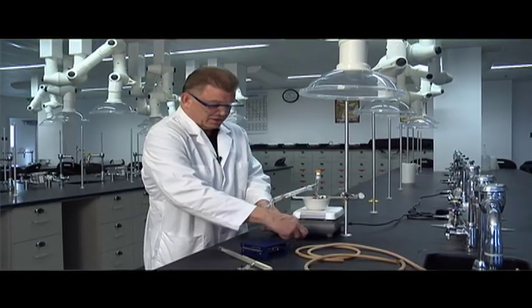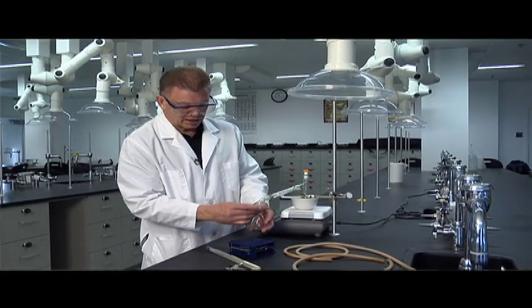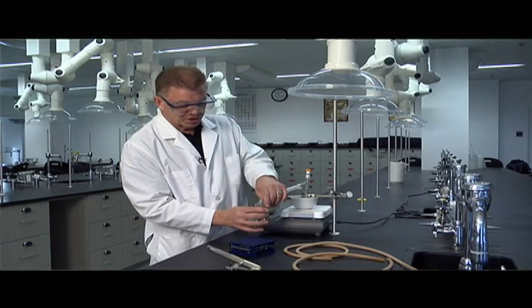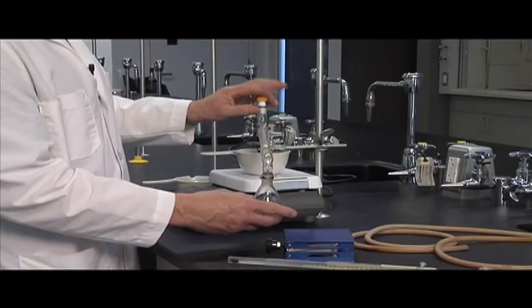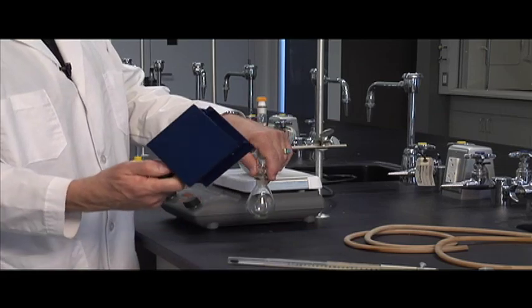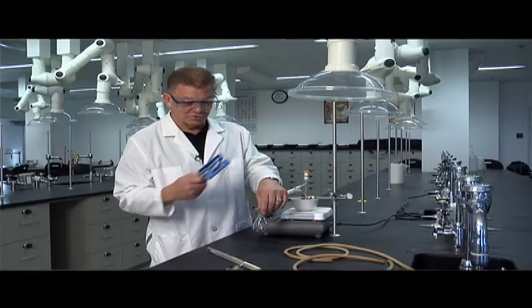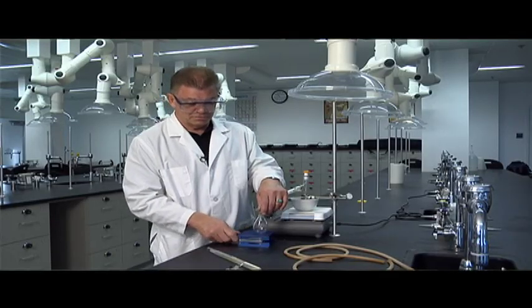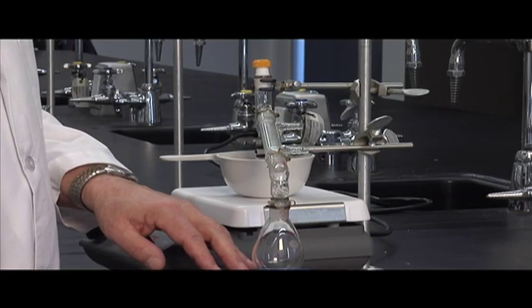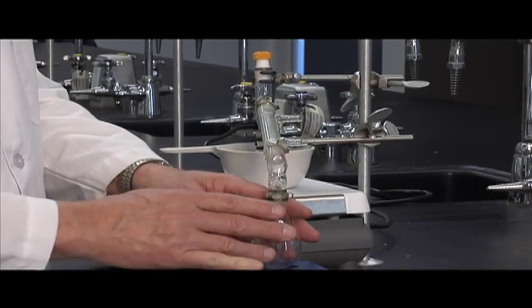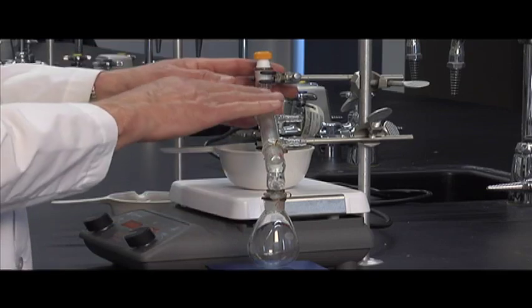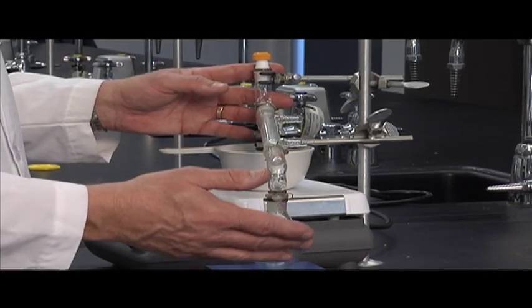We'll put the collection flask here, secure it with another keck clip. So you notice all of these joints were secured by keck clips except for the thermometer adapter. Now here's a little lab jack, and these are in the drawers with the hot plates. We use the lab jack to support this flask. This will get heavy. We don't want this whole thing leveraged out here and tipping over.